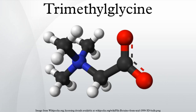Trimethylglycine is an amino acid derivative that occurs in plants. It was the first betaine discovered. Originally it was simply called betaine because, in the 19th century, it was discovered in sugar beets. Since then, many other betaines have been discovered, and the more specific name glycine-betaine distinguishes this one.